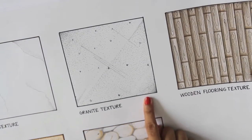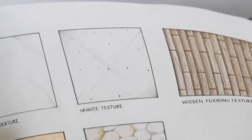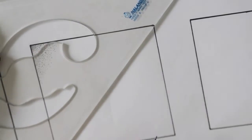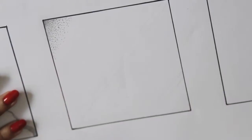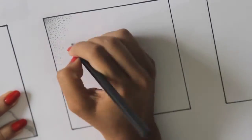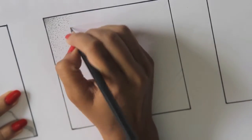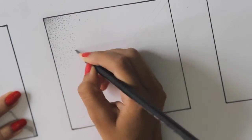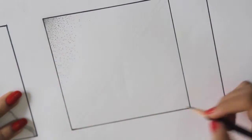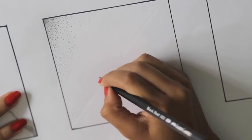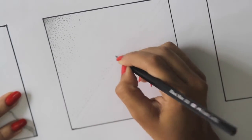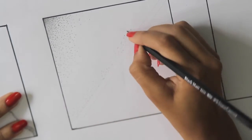Next, we will be showing you about the granite texture. Start stippling from the corner. Then make two diagonal lines to leave a gap. As you reach the diagonal lines, make sure that the intensity of the stippling reduces.